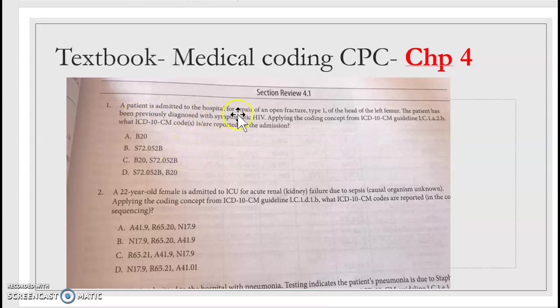You have a question given and this is ICD-10, so we're always looking for diseases. You can see the person has a fracture. You can also see the person has been diagnosed previously with symptomatic HIV.